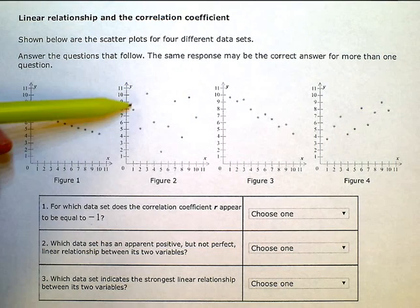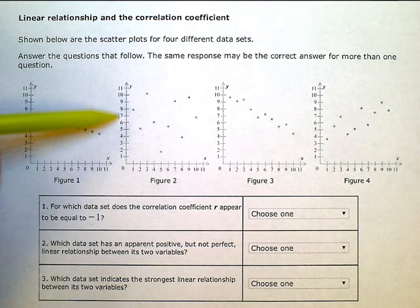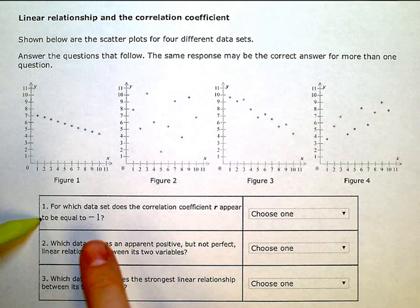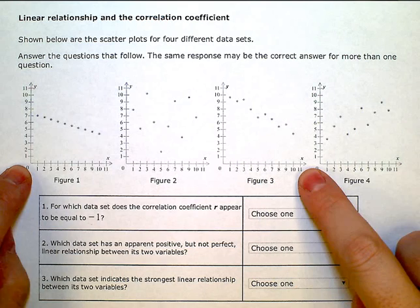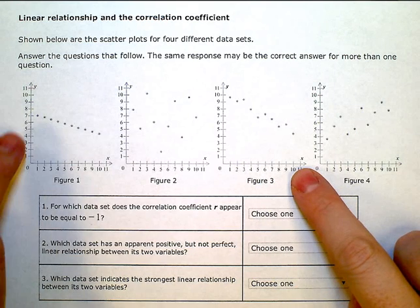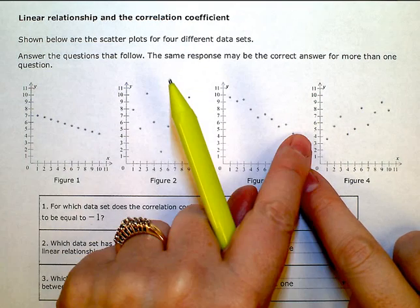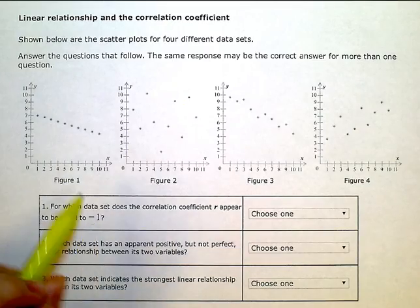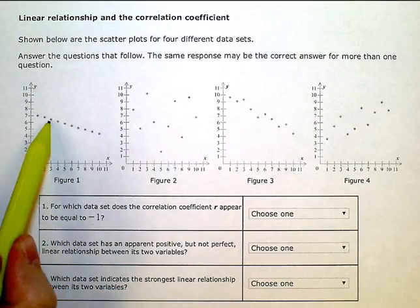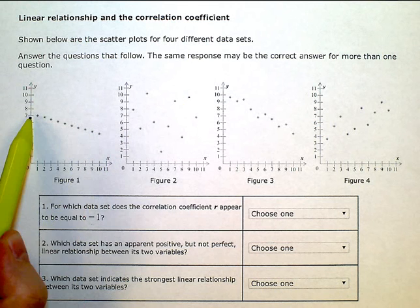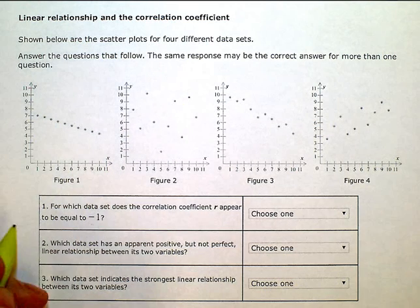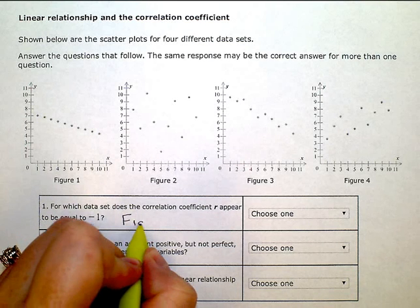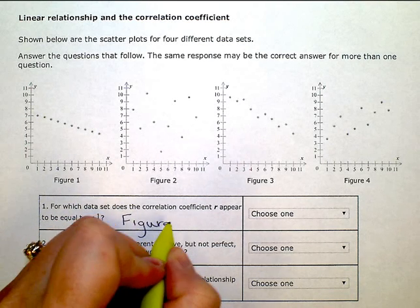This one, they're just scattered all over the place. There's no general pattern. So for it to be close to negative 1, I'm looking at one of these two. Those are the two with the negative correlation. And to be equal to negative 1, that means they line up pretty perfectly in an exact line. So the answer here would be figure 1.